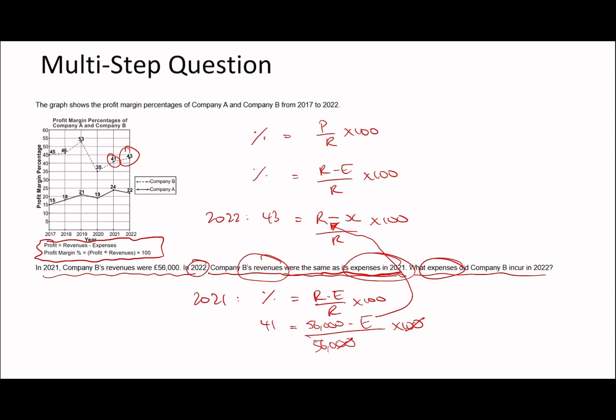Dividing by 56,000 and multiplying by 100, you can simplify. So 560 times 41 gives us 22,960. Therefore 22,960 equals 56,000 minus E, and so expenses equals 56,000 minus 22,960, which is 33,040. So the expenses in 2021 are 33,040, which equals the revenue in 2022.